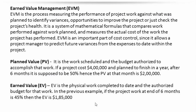The only complexity here is that schedule is also calculated based on dollars. Once we understand that, it's fine. What is planned value? If you are working on a project with a cost of $400,000 planned to be finished in one year, after 6 months — which is 50% of the year — your planned value is 50% of the project cost, which is 50% of $400,000, equaling $200,000.